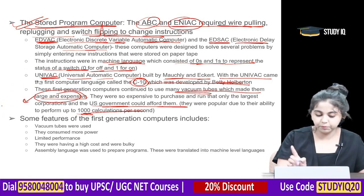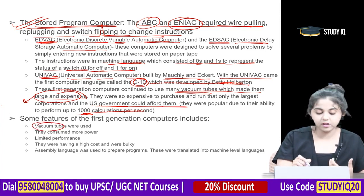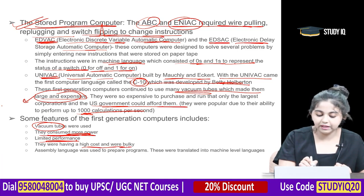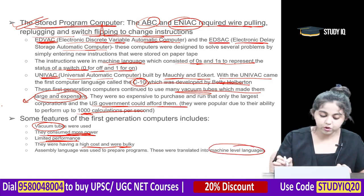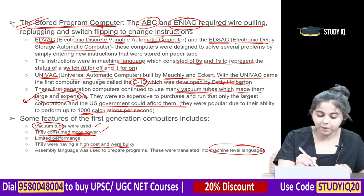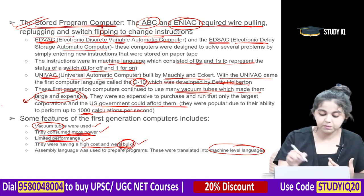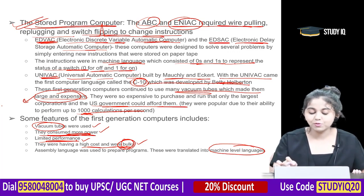Features of first generation computers: vacuum tubes were used to fabricate the processor, they consumed more power, had limited performance, high cost, and were bulky. Assembly language was used to prepare programs, which were then translated into machine level language.